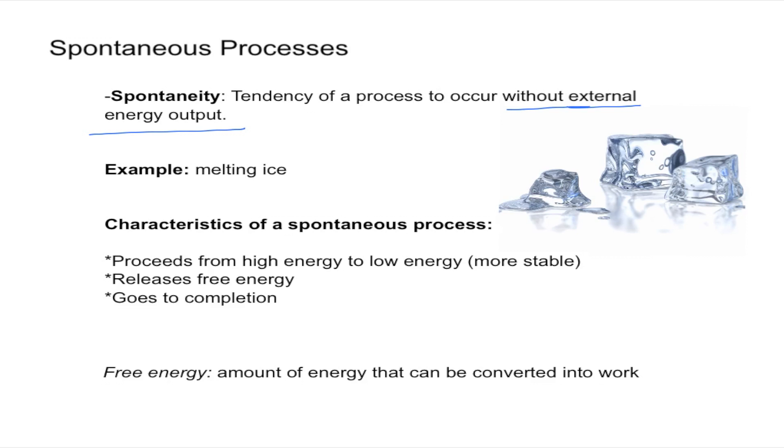Another example is the combustion of methane. So now let's think of what happens in a spontaneous process. The first characteristic of a spontaneous process is that it always proceeds from a high energy state to a low energy state, making it more stable. So it goes from something that's unstable to stable.